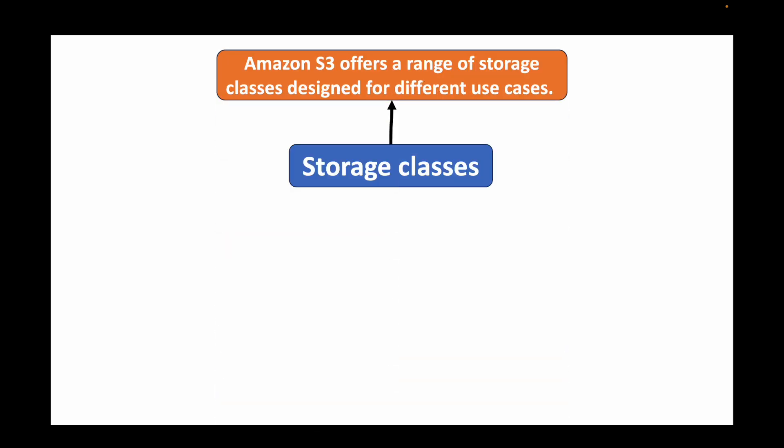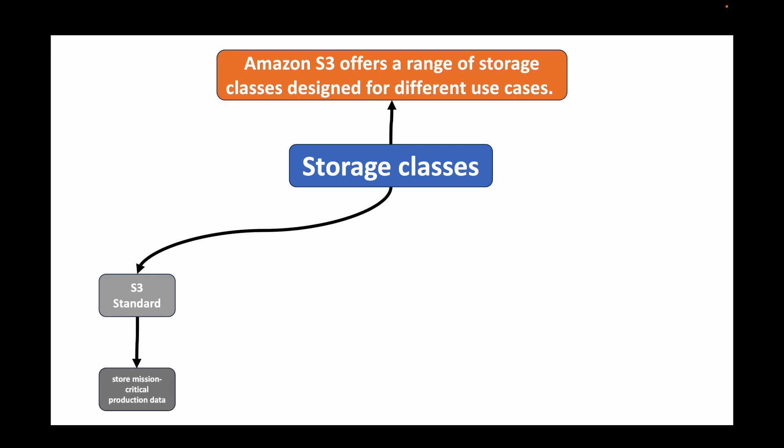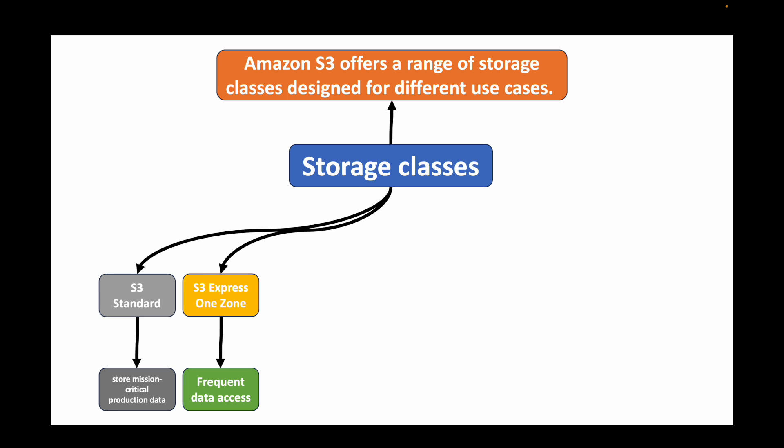S3 provides a variety of storage classes so you can choose based on your use case and requirements. We have S3 Standard, which can be used to store mission-critical production data — basically any data that needs to be readily available. Then we have S3 Express One Zone for frequently accessed data, and S3 Standard-IA, where IA stands for Infrequently Accessed, which helps you save cost by storing infrequently accessed data.